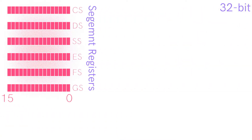Next are the segment registers. These are all pointers. CS points to the start of the code segment, DS points to the start of the data segment, and SS points to the stack. ES, FS, and GS can point to other data segments.